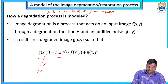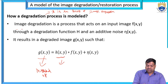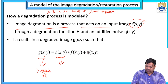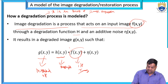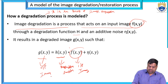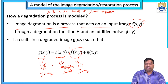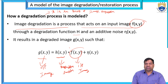g(x,y) is the degraded output. The input is f(x,y), processed through degradation function h. The output g(x,y) is the degraded output, where h(x,y) is the degradation process applied to the input image. We apply the degradation process to remove noise from the original image.